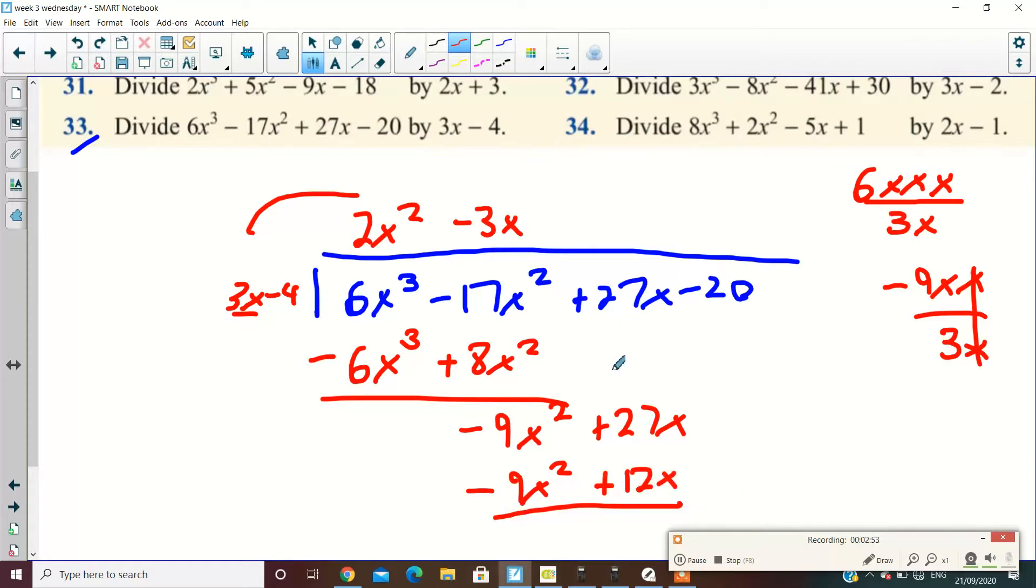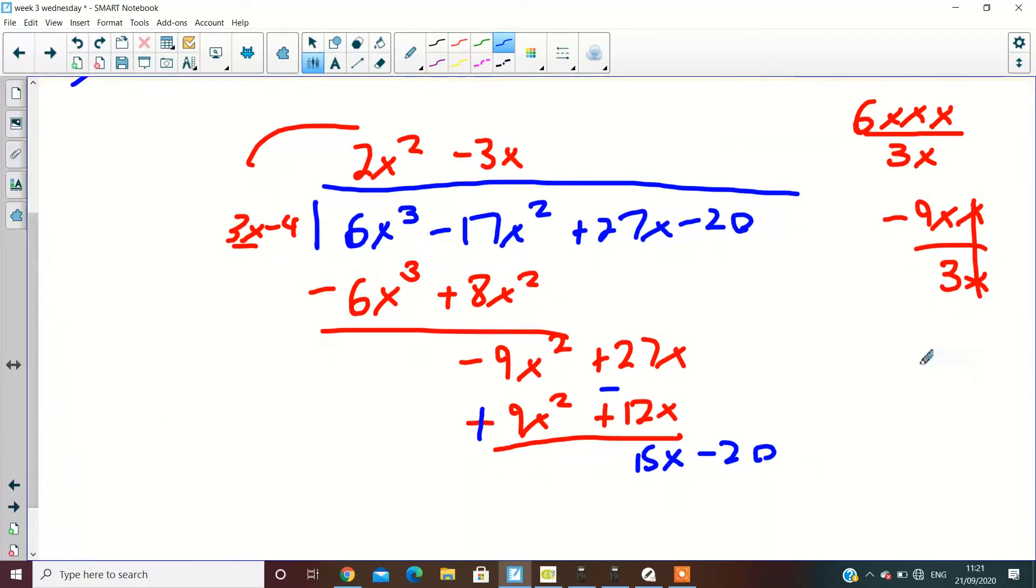Minus 3x multiplied by minus 4. Once again, change the signs. Plus an 8. So what's going to be there then? Drop down there. 20. And what's 15x divided by 3x? 5, yeah? And what happens there? Plus 15x minus 20. Minus and a plus. And then the answer is? 0. Well, good. Who got that one out?